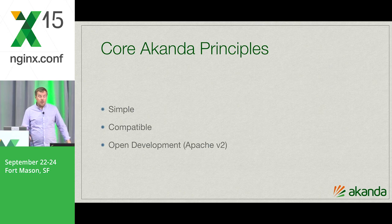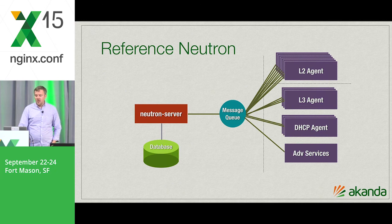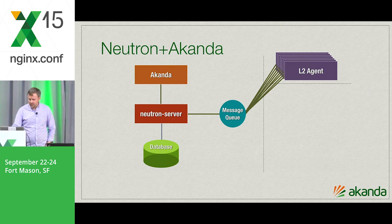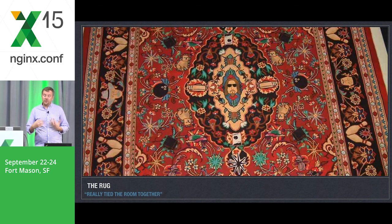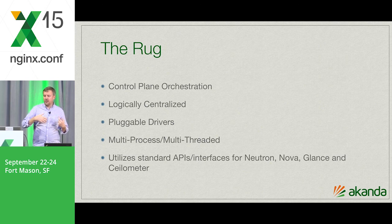Aconda was founded with three core principles: being simple, compatible, and open development — since it was born out of a company with a strong open source ethos. The project is Apache 2 licensed. This is the reference implementation of Neutron — the same set of microservices. One of the challenges is keeping them all running and monitored. With Aconda we changed it a bit and replaced the layer three and above services with an Aconda service. Central to that is the orchestration system, which has an escape prototype nickname called the rug. If you've seen The Big Lebowski, it's a reference to 'the rug really ties the room together' — we think network orchestration ties the room together.